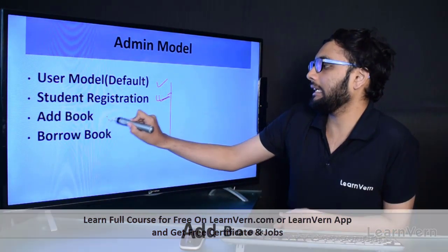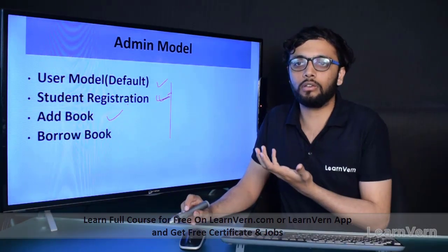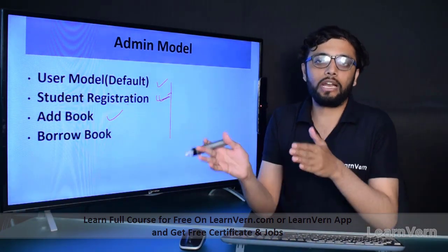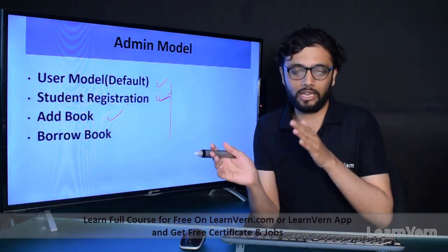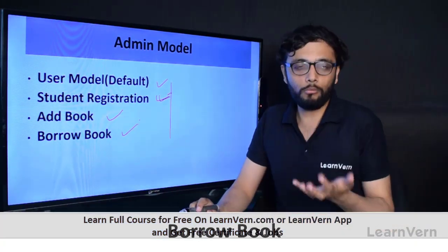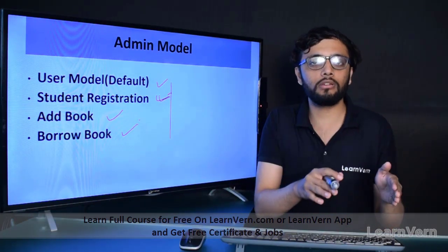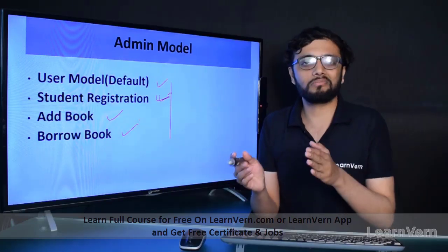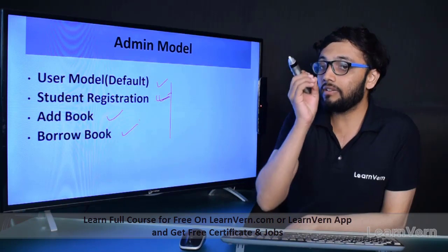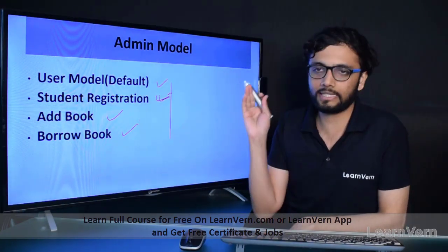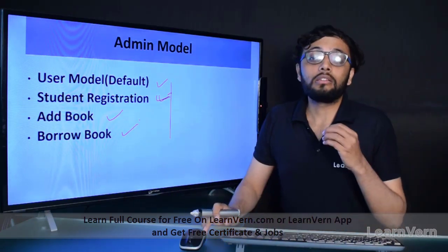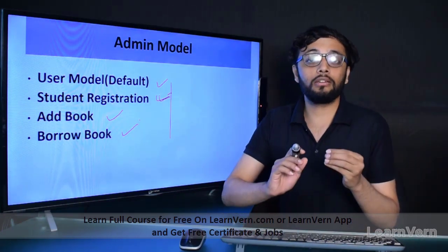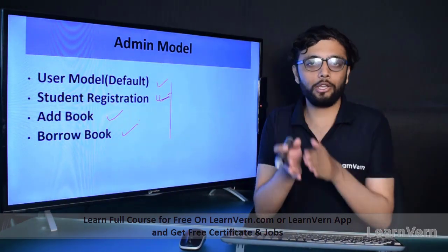After that, add book - there will be one model in which we should add our book. That means if some new stock is arriving in the library, we have to add the book. And borrow book - the book which is borrowed by the students, there will be one model for borrow book so we have the track record to generate reports and backups as well.